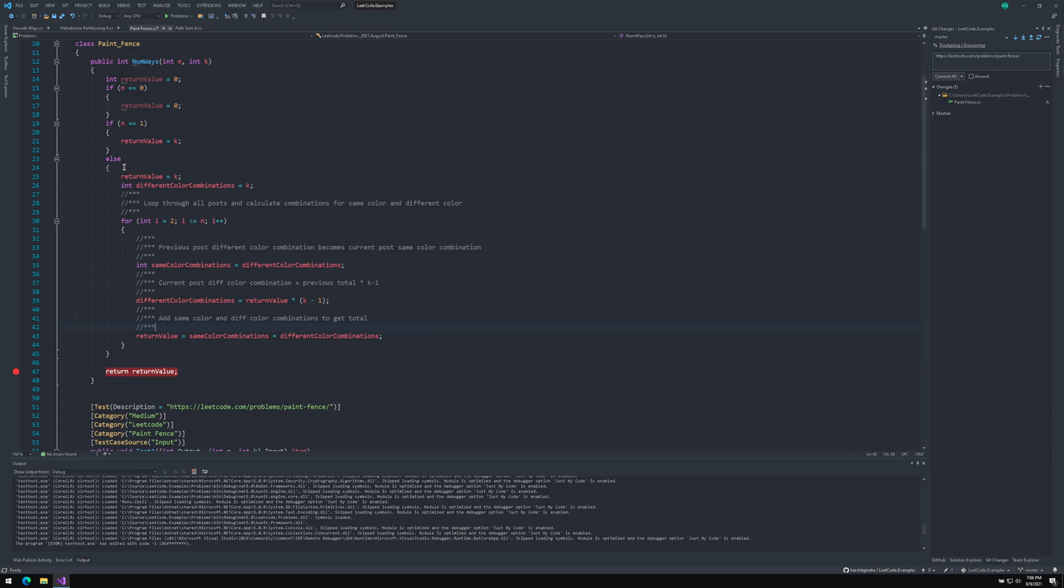If you take a look at time complexity and space complexity, our time complexity is O of N because we are only looping through one post at a time and the maximum is N and the space complexity is O of one. We are not maintaining a variable to save anything or maintain the state of each and every post. We are only saving the final value at each post, the number of combinations that we have come up or that we have calculated.